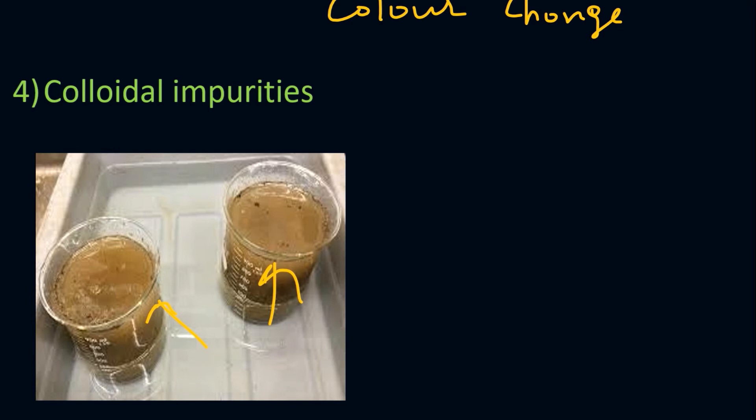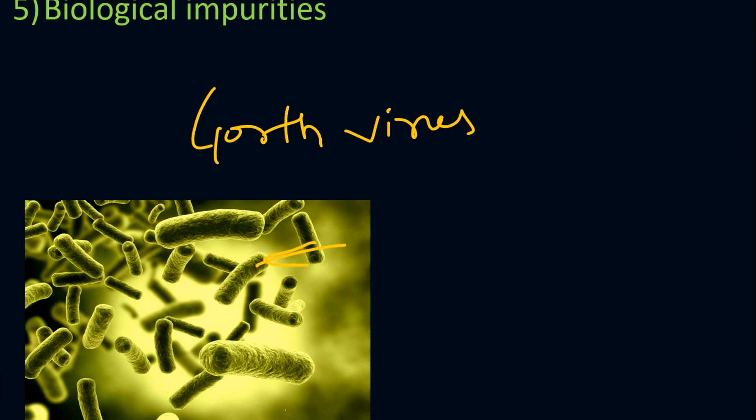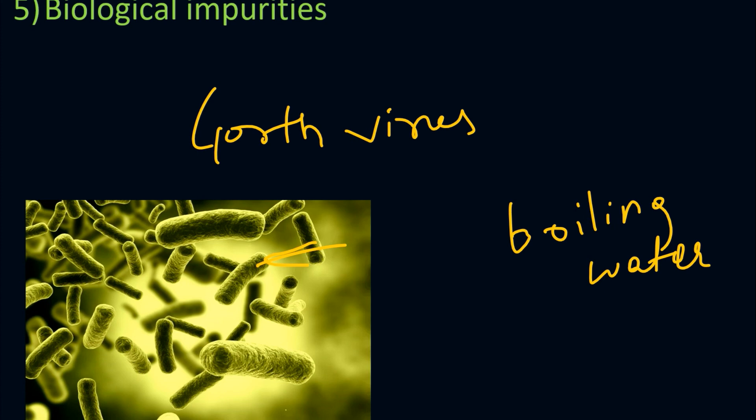The fifth type is biological impurities. Biological impurities refer to the growth of viruses and other pathogenic bacteria inside the water. These can be removed by boiling the water — if you boil water, all biological impurities can be removed easily. This covers all the impurities present in water.